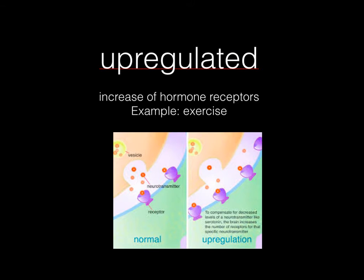Up-regulating, or up-regulated, is the increase of hormone receptors. An example of up-regulating a hormone receptor is what happens when we exercise. As we exercise, we are able to up-regulate insulin receptors, and so we're able to take in more glucose, so we don't need as much insulin in order to do that. We have a picture here of these receptors kind of opening up in order to regulate.